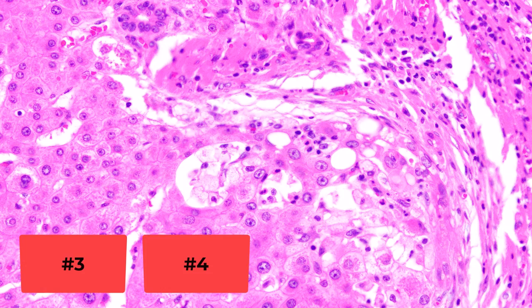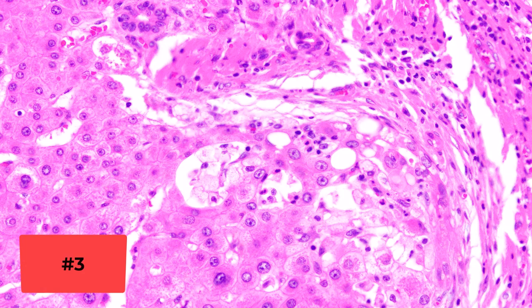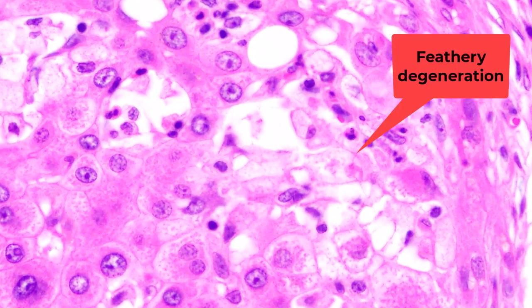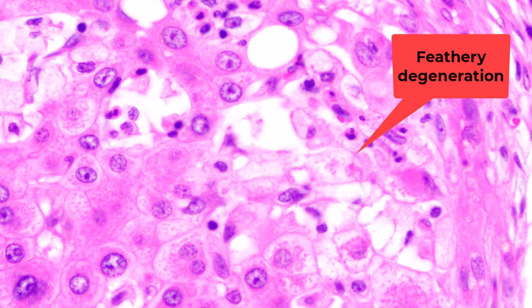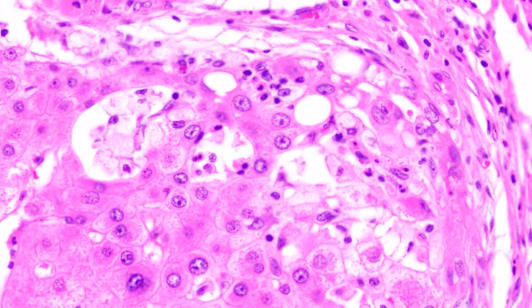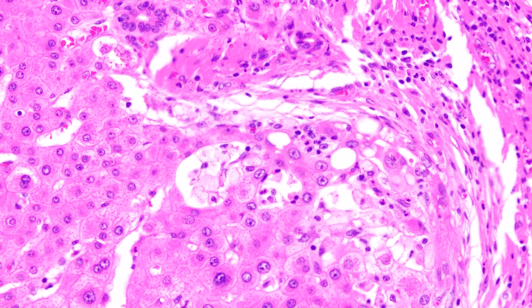Feature number three: the hepatocytes are enlarged with pale to clear cytoplasm. This is the so-called feathery degeneration, again precipitated by the accumulation of bile salts, and typically seen at the interface between the hepatic nodules and fibrosis.